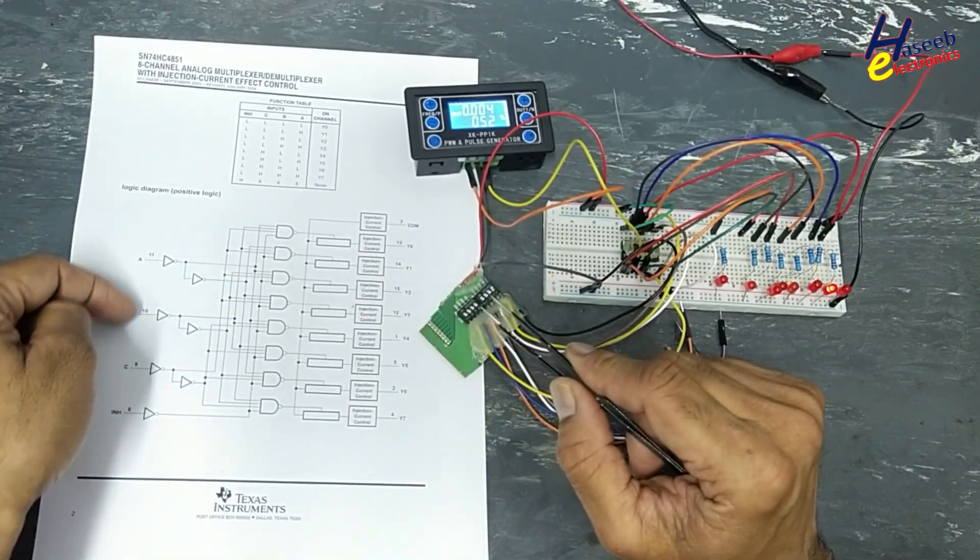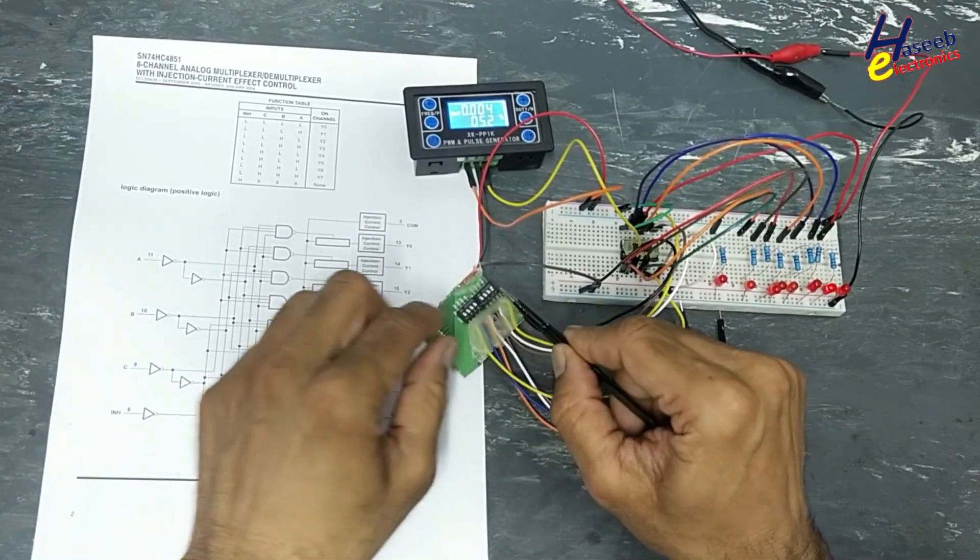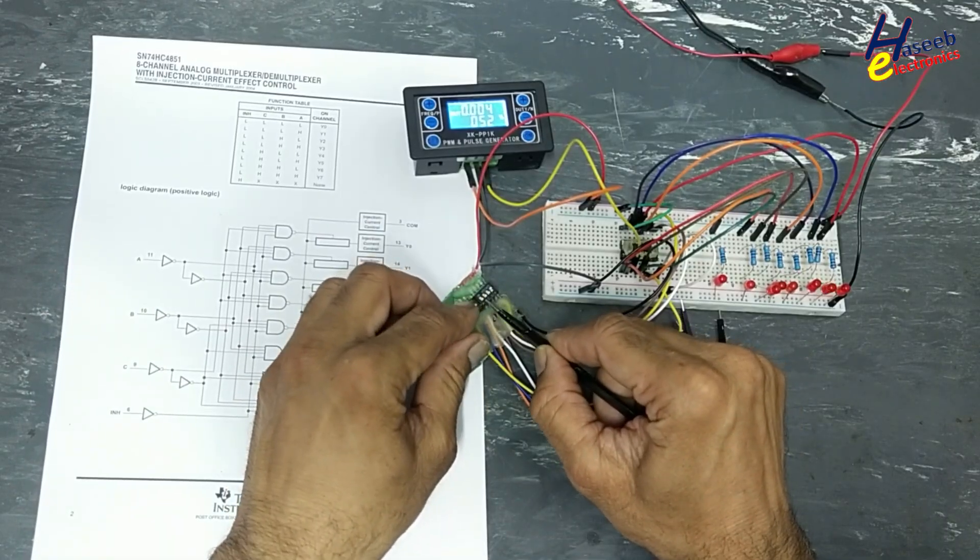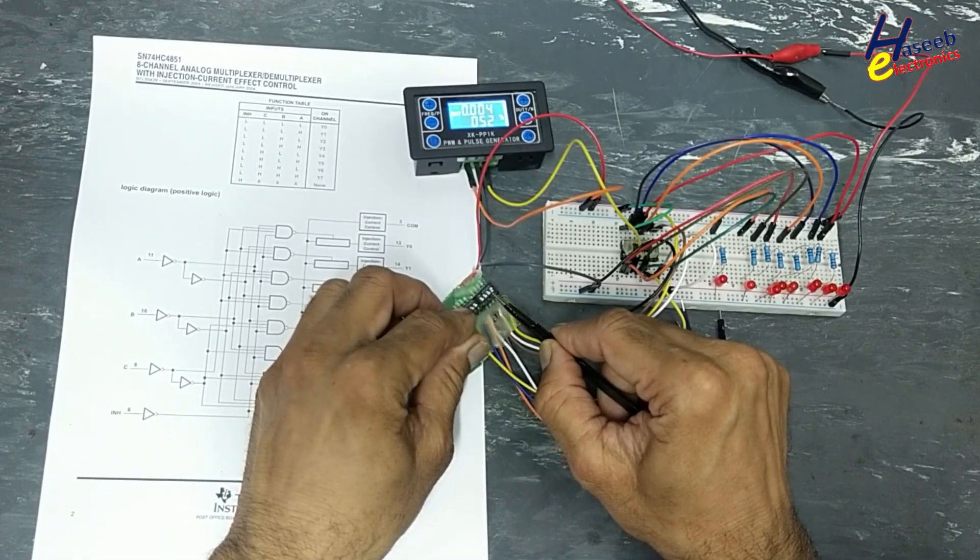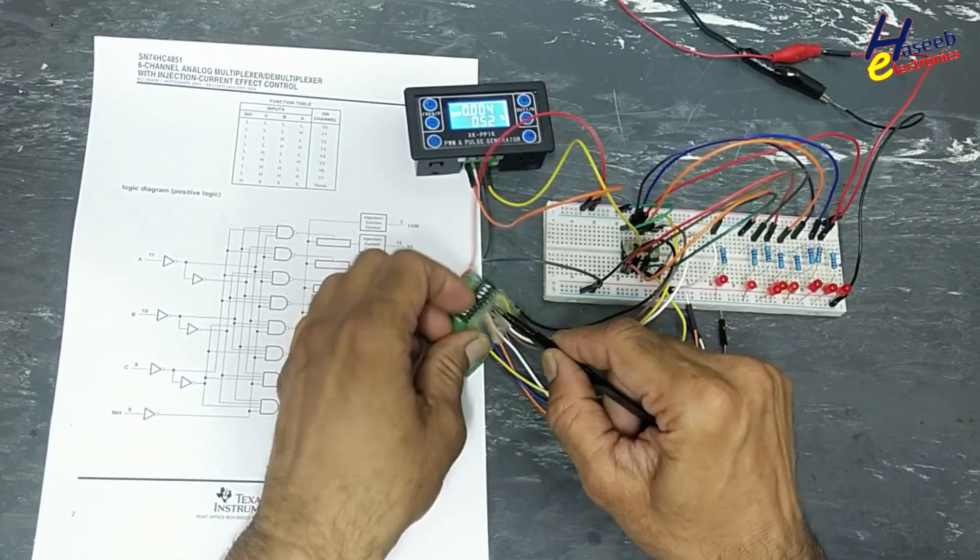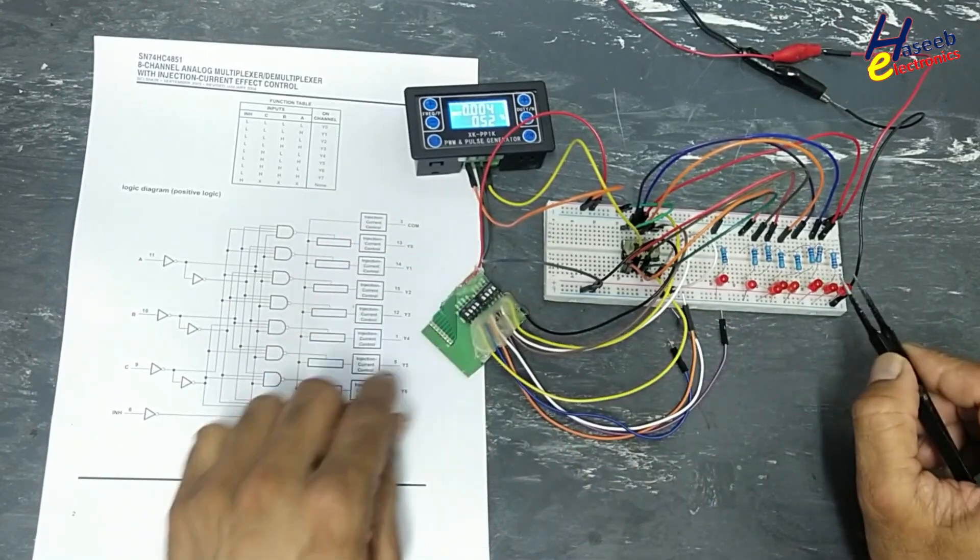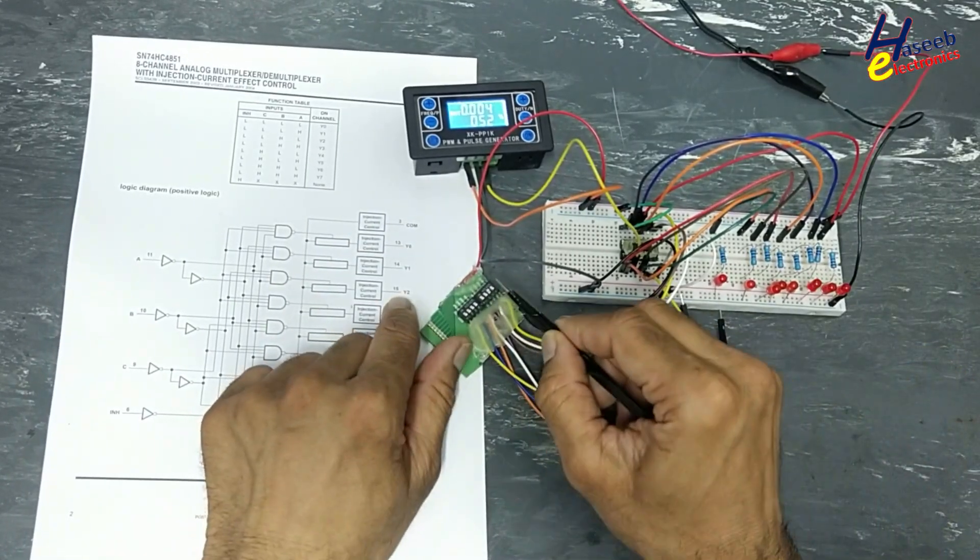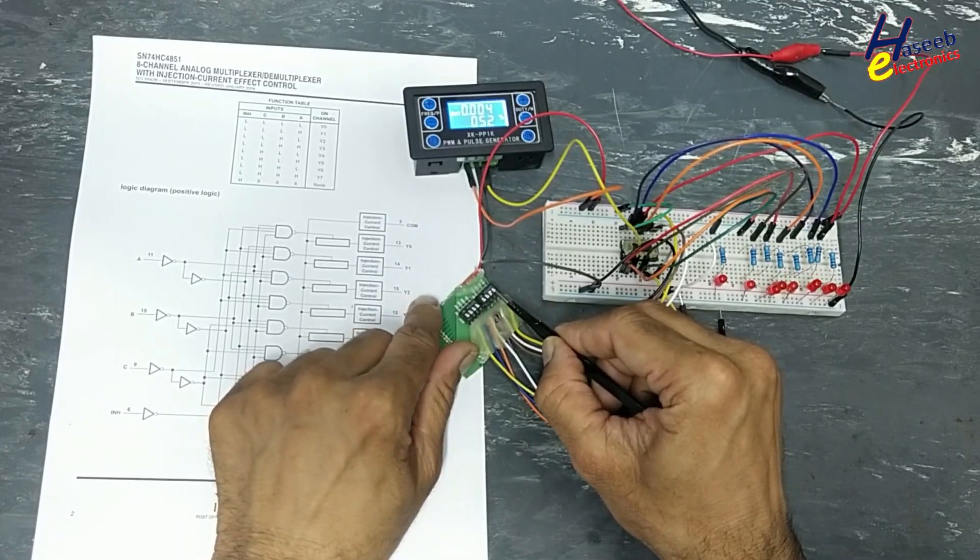So BCD code is provided here. Now C zero, B one, A zero: zero one zero. This pin. Zero one one.